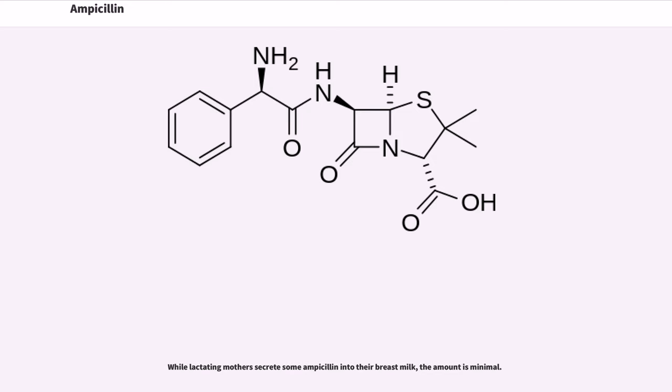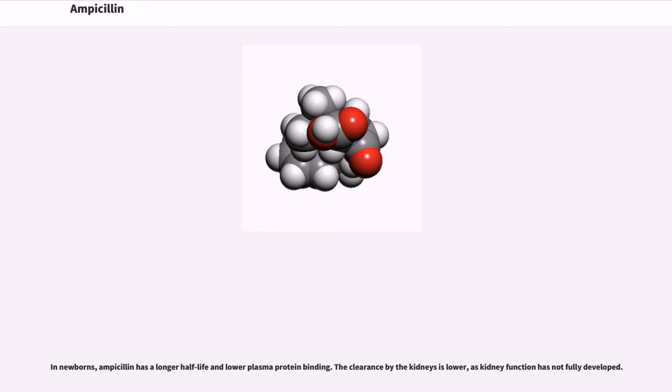While lactating mothers secrete some ampicillin into their breast milk, the amount is minimal. In newborns, ampicillin has a longer half-life and lower plasma protein binding. The clearance by the kidneys is lower, as kidney function has not fully developed.